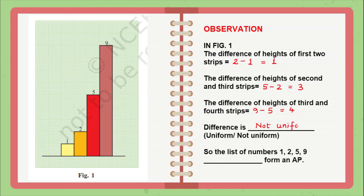So we can conclude that the list of numbers 1, 2, 5, 9 does not form an AP.